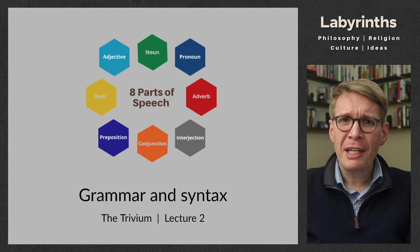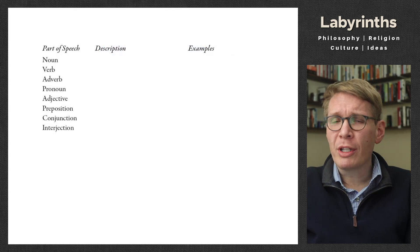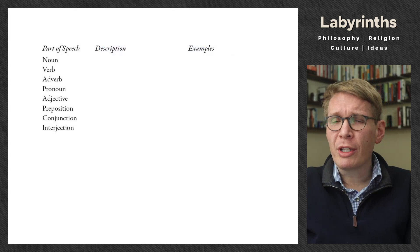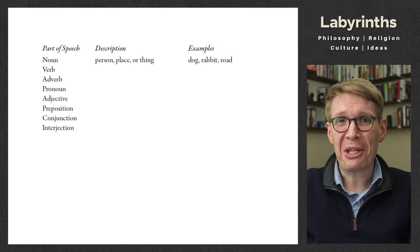On the title slide here, we have the eight parts of speech. These are things that we know, but our purpose in reviewing these is to really understand what are the basic building blocks that we're going to be working with in this course, especially as we move on to rhetoric and logic. We know that there are eight parts of speech. We start with nouns. Nouns refer to a person, place, or thing. Dog, rabbit, and road are examples of this. This chart is taken from the textbook by Hauser.